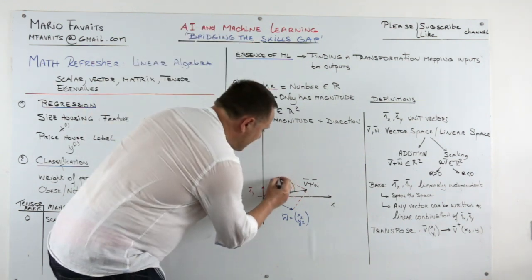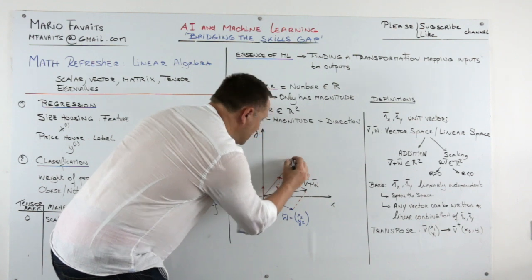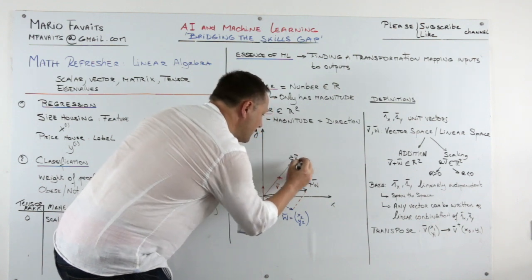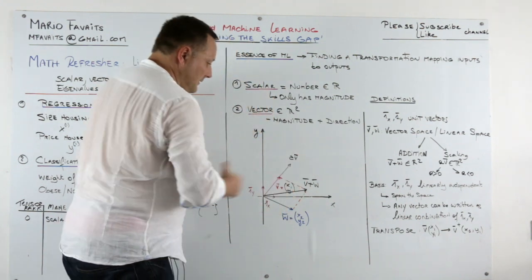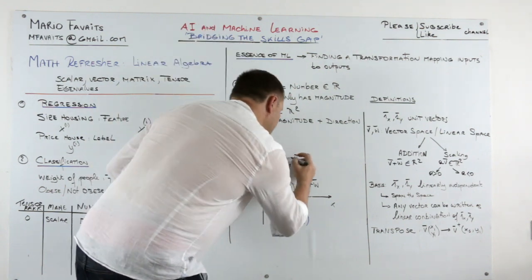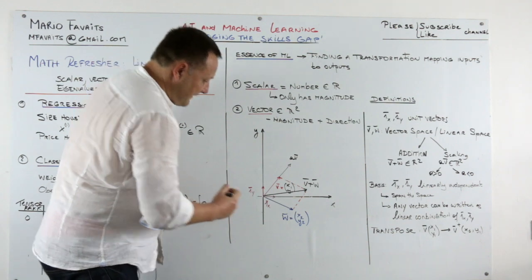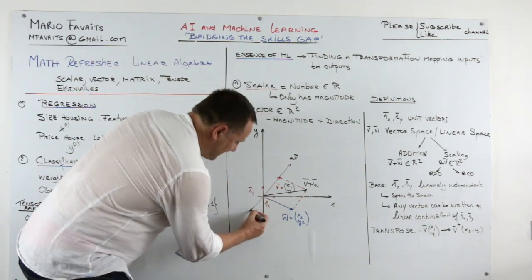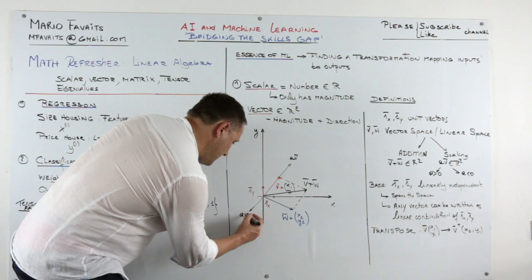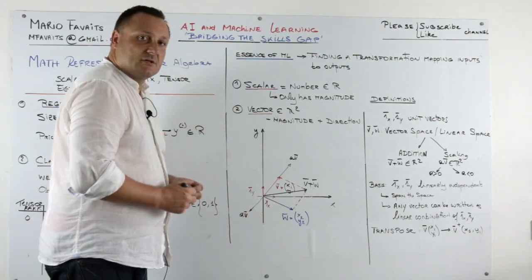So you have a vector v here. Av will just be, you know, pulling this out a bit. This would be Av. And is still an element of the vector space. If a is negative, well you go this way. Av would be here. The other direction.